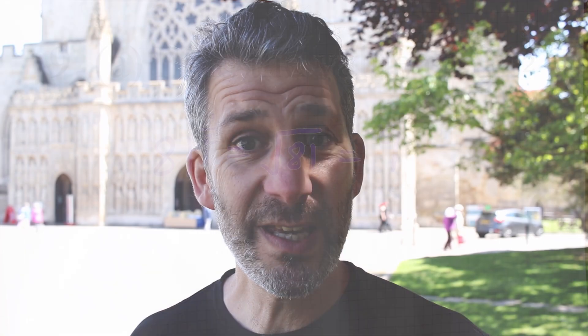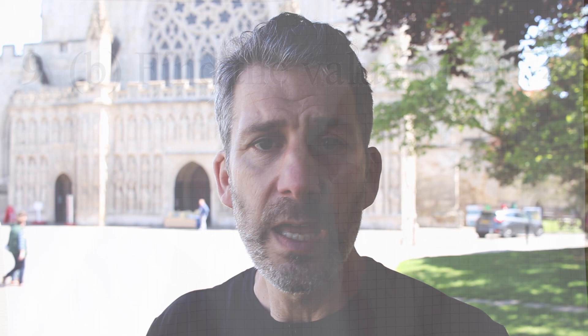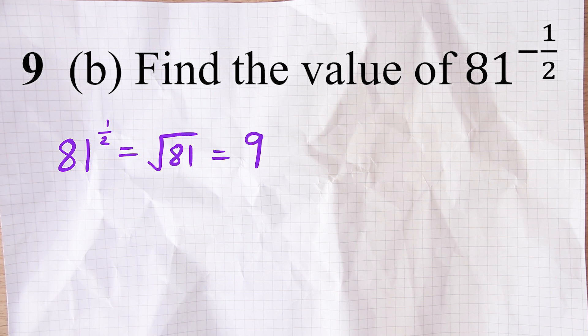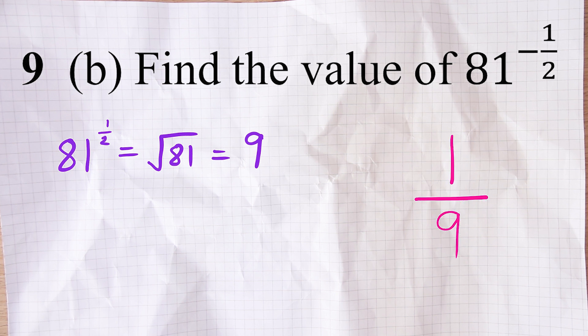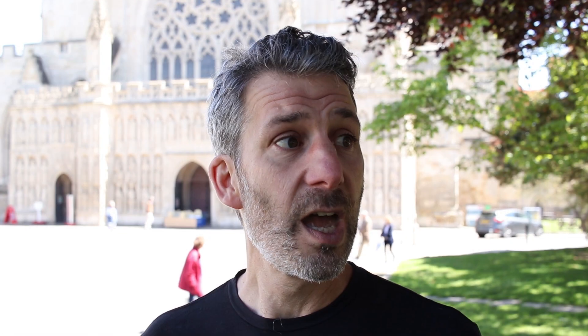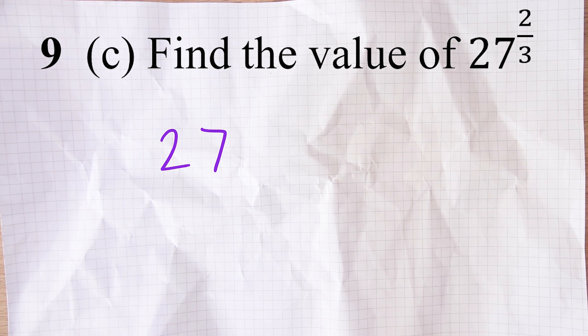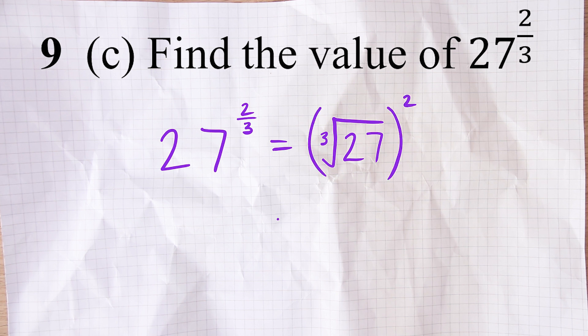If it's to the power of a third, that's the cube root. You'll also need to deal with negative indices — for example, 81 to the power of negative one-half. To evaluate those, you take the reciprocal of the positive version: 81 to the power of a half is 9, and the reciprocal of 9 (think of it as 9 over 1 flipped upside down) is one ninth. So 81 to the power of negative a half is one ninth. You may also get things like 27 to the power of two-thirds: find the cube root of 27 (which is 3), then square it — 3 squared is 9.